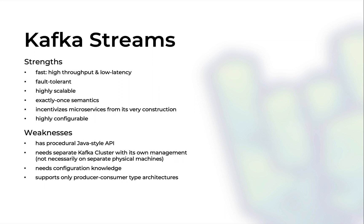As a predominantly Scala programmer I absolutely hate Kafka's imperative Java-style API, but I'll swallow that pain for Kafka's otherwise excellent capabilities. Another downside is that if you want Kafka in your architecture you'll need to set up a separate Kafka cluster to manage, even though you won't necessarily need dedicated machines. Kafka is also highly configurable but you'll need to know the configurations in advance. Finally, Kafka supports the producer-consumer type architectures well, but it's not as versatile as other frameworks — it never feels like it was meant to support other architectures.